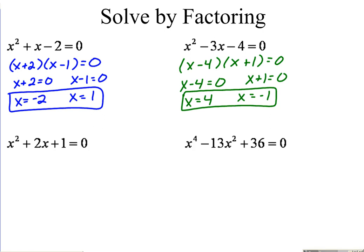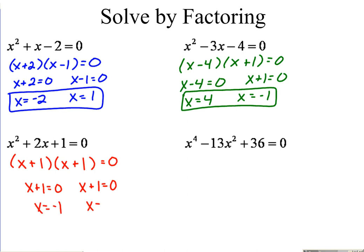Third problem: numbers that multiply to be positive one and add up to be two are one and one. Set each factor equal to zero. Notice that both factors produce the same solution, so this quadratic equation has one solution at negative one.